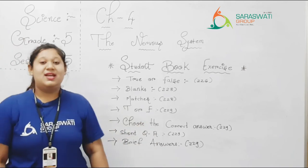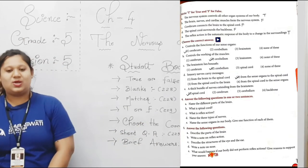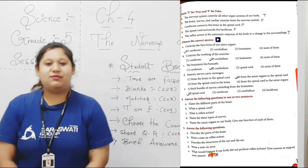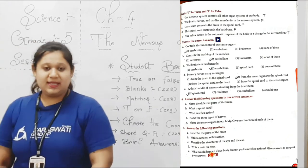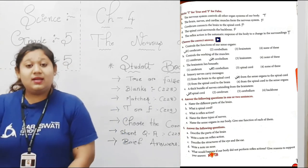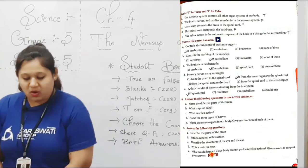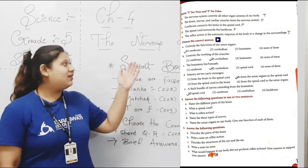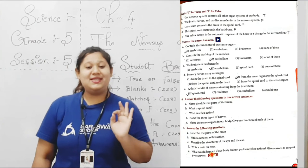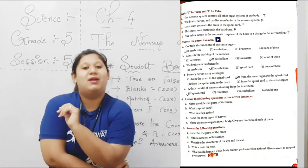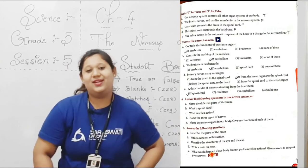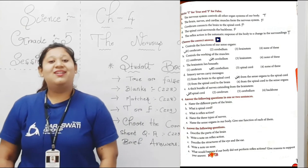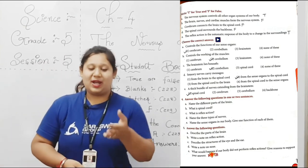Next question: again True or False, page number 229. T for true and F for false. Statement A: The nervous system controls all the organ systems of our body. Nervous system humaari body ke organs ko control kerti hai — yes, this statement is true. Write down T.